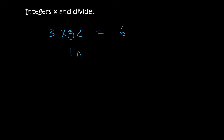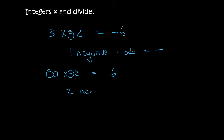Now 1 negative is odd. And we said in the previous lesson that if it's odd then your answer is a negative. So if I have minus 3 times minus 2, obviously 3 times 2 is 6, but now you have 2 negatives. 2 is an even number and so the answer is positive.